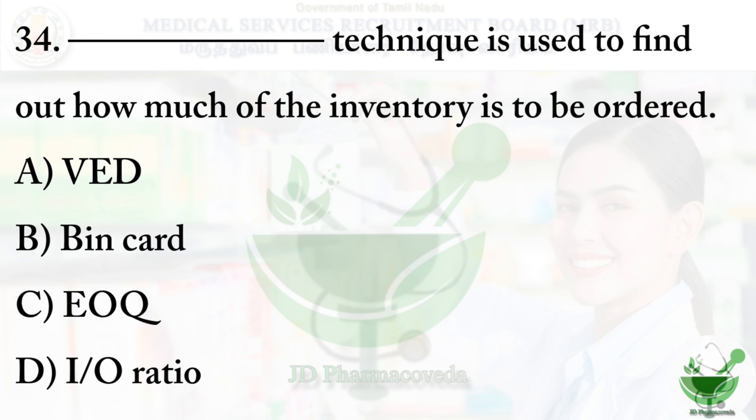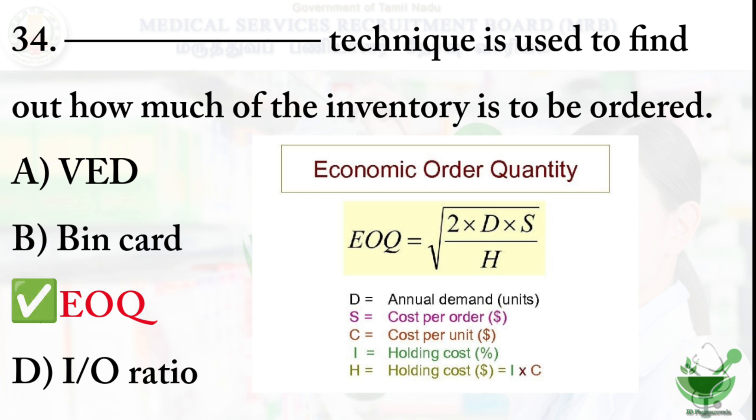Question number 34: This technique is used to find out how much of the inventory is to be ordered. The options are: option A VED analysis (Vital, Essential, Desirable), option B bin card, option C EOQ (Economic Order Quantity), and option D I/O ratio (Input-Output ratio). The correct option is option C, EOQ, which is a calculation that helps companies determine the ideal order size for their inventory.